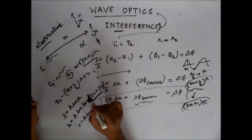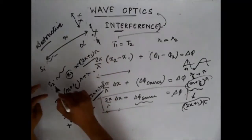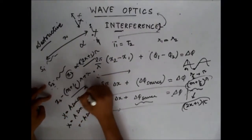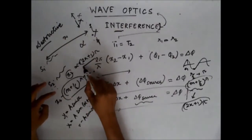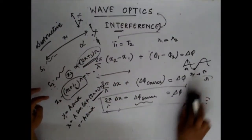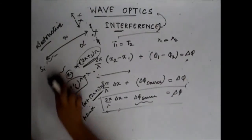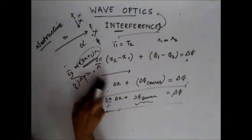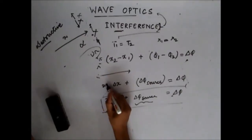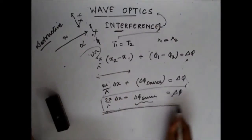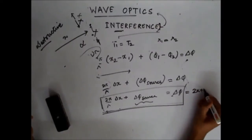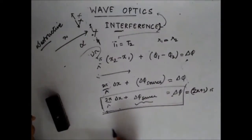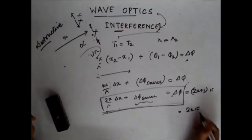The condition for destructive interference is that S2 should be (m + ½)λ ahead of S1, or equivalently the phase difference between the two waves can be (2k+1)π. This is my equation for the phase difference — for destructive interference it should equal (2k+1)π, and for constructive interference it was equal to 2kπ.